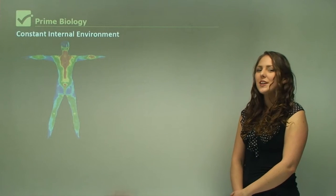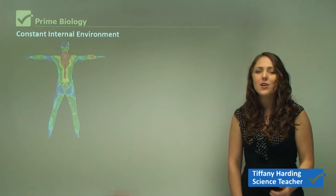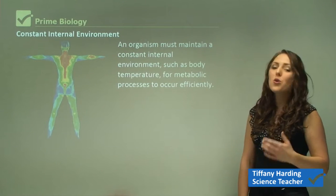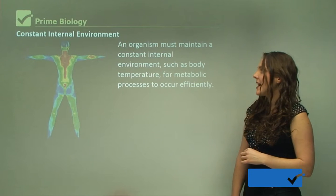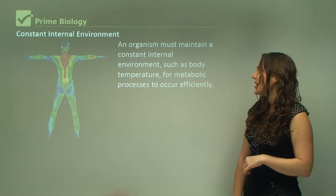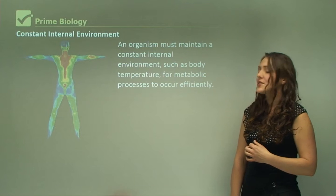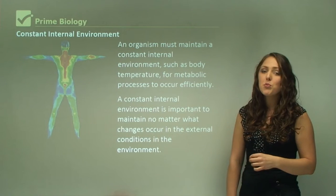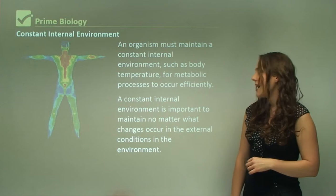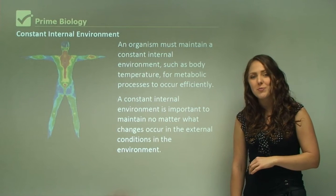In this module we're looking at why it is important to maintain a constant internal environment. An organism — any living thing — must maintain a constant internal environment, such as body temperature, for metabolic processes to occur efficiently. A constant internal environment is important to maintain no matter what changes occur in the external conditions of the environment.